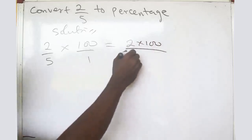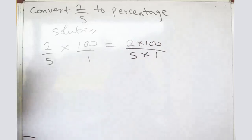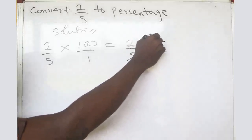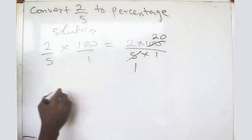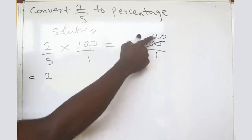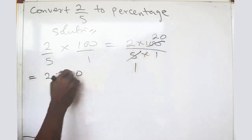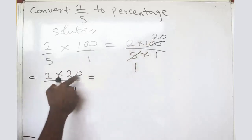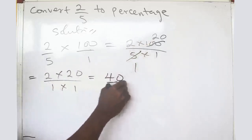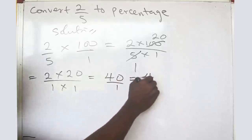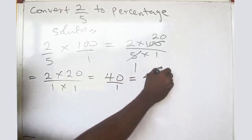Five can divide itself into one hundred to give you twenty, so we are left with two times twenty divided by one. Two times twenty is forty, and one times one is one, so forty divided by one is forty. You then put the percent sign.